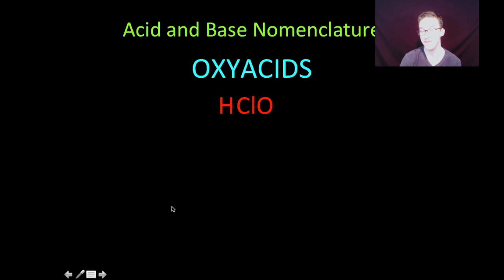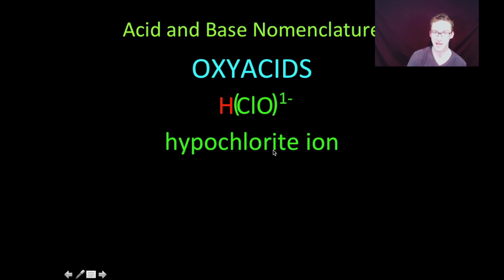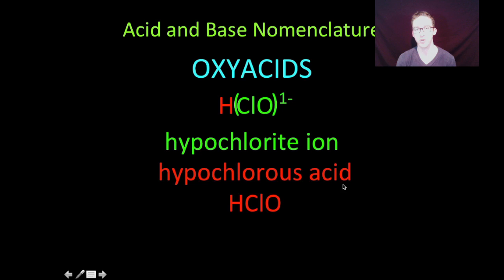So let's take a look at this oxyacid. It's not binary, but I can identify it as an acid. So we start with that H. The rest of this makes up the polyatomic ion, hypochlorite ion. Again, just remember adichitis, ites become ous. This is known as hypochlorous acid. It's just the hypochlorite ion attached to a hydrogen ion.